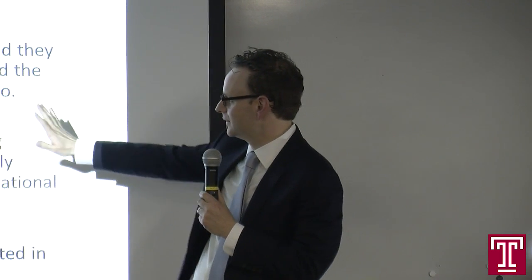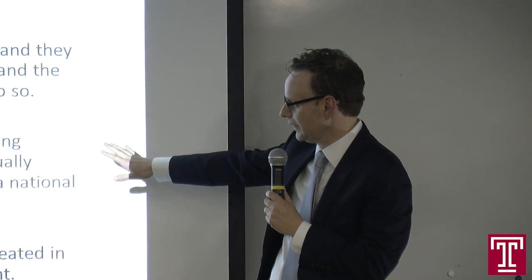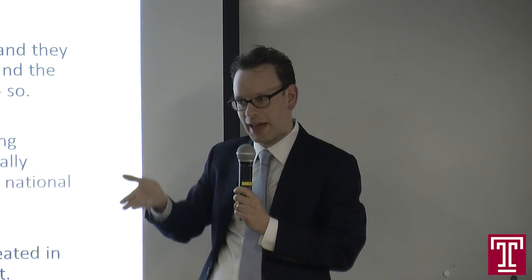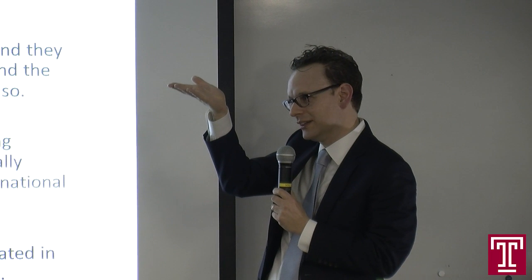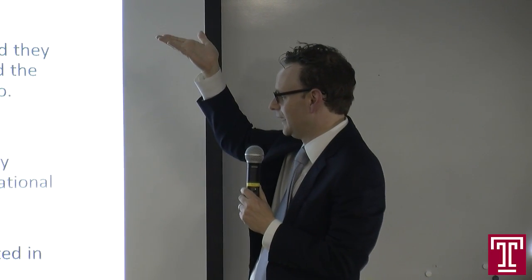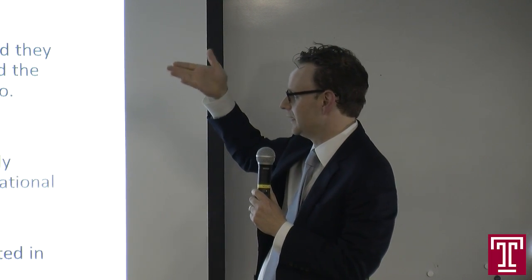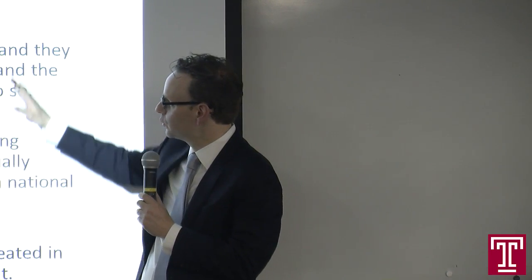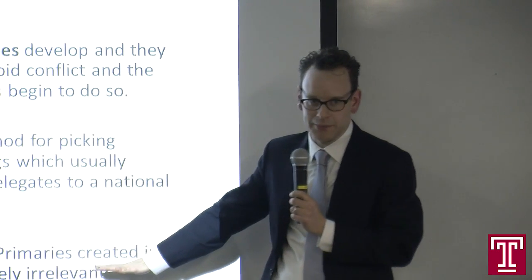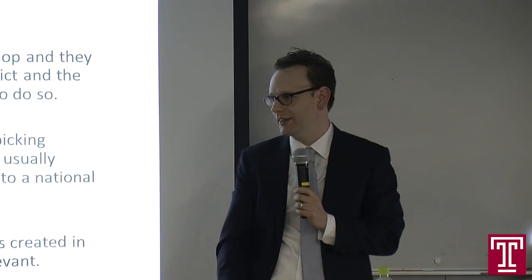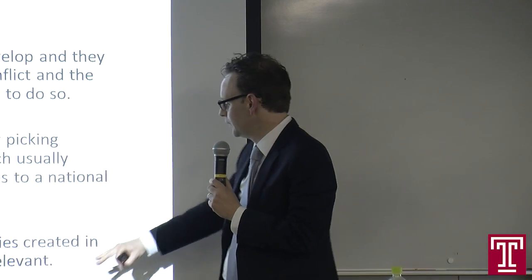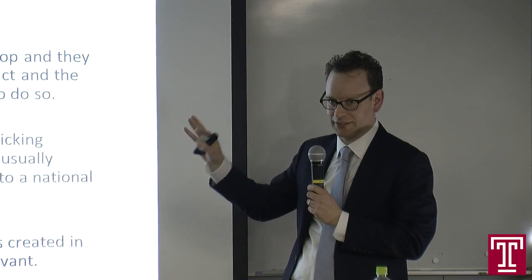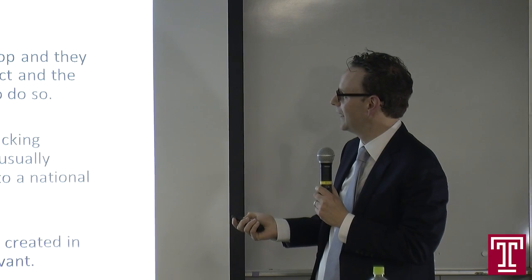Eventually in the 1800s, as the country grew and parties got larger, they moved to a convention system — local meetings throughout the states building up to county and state meetings, eventually selecting people to go to a national convention to pick the party's candidate for president. Throughout this whole time, there was no significant role played by the public. It was completely driven by party leaders. Even though primary elections appeared in the early 1900s, they were basically irrelevant and did not determine any candidates for president.